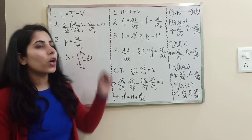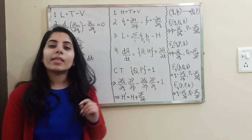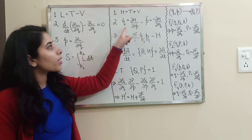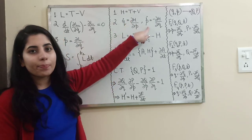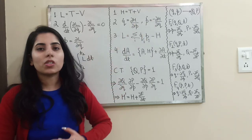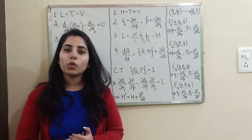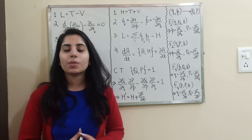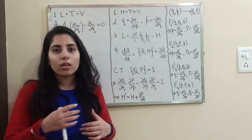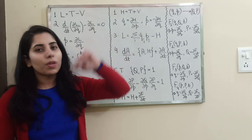Now for the topic Hamiltonian: the first formula is H equals T plus V. Then we have Hamilton's equations of motion: q̇ equals ∂H/∂P, and Ṗ equals minus ∂H/∂q. Both equations are Hamilton's equations of motion and are very important. They help in simplification steps and in substituting one variable or coordinate in terms of another.